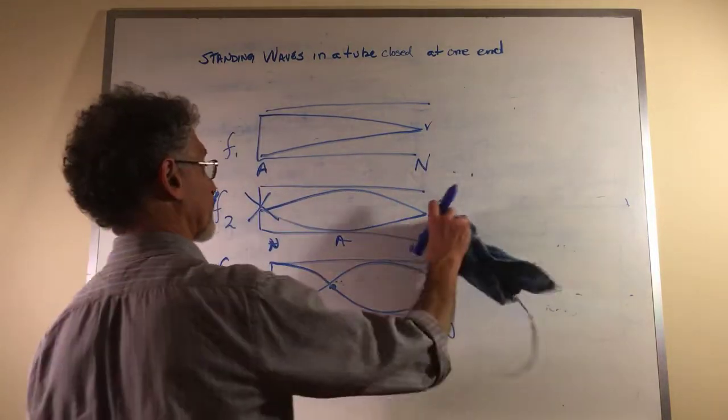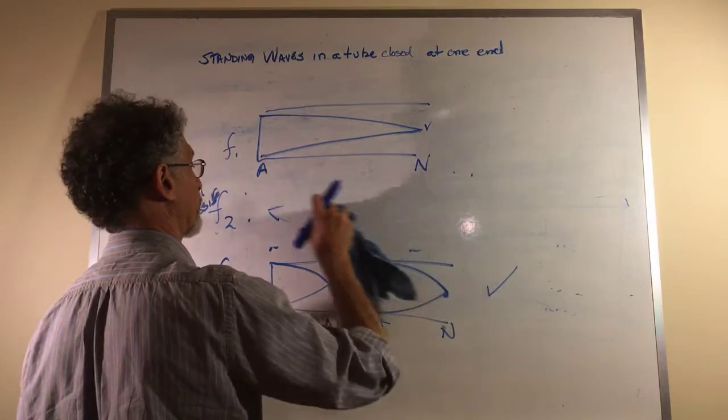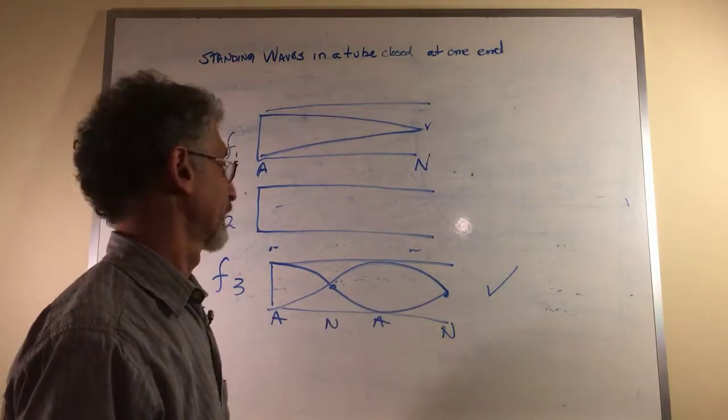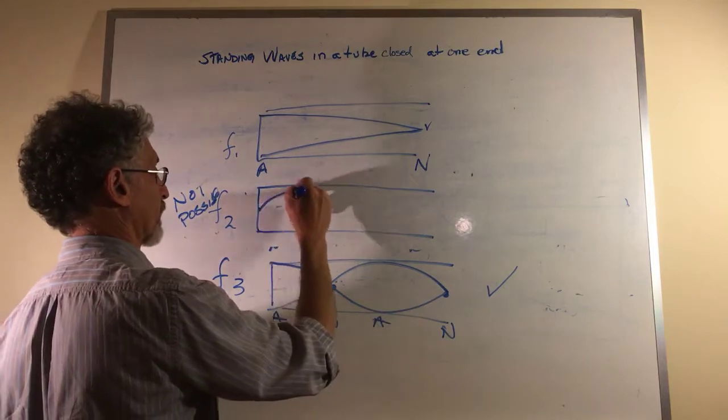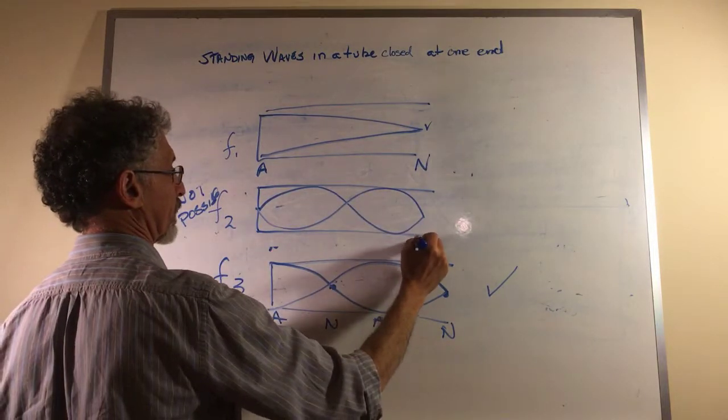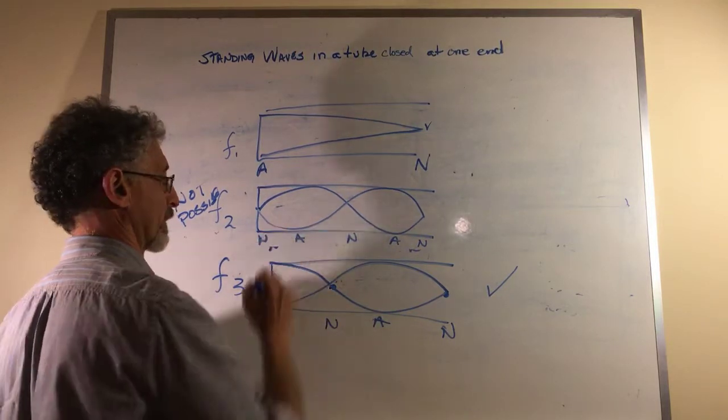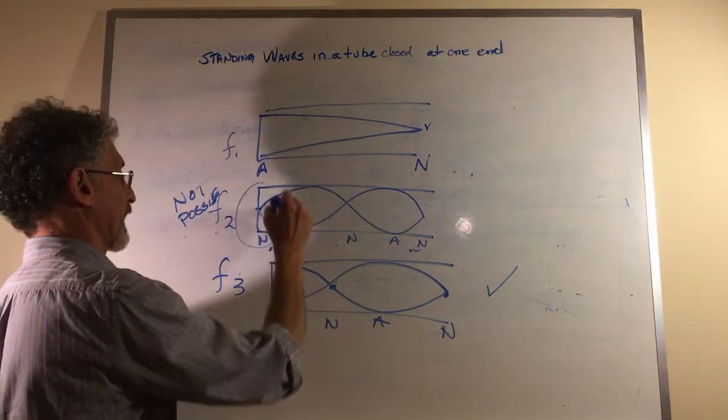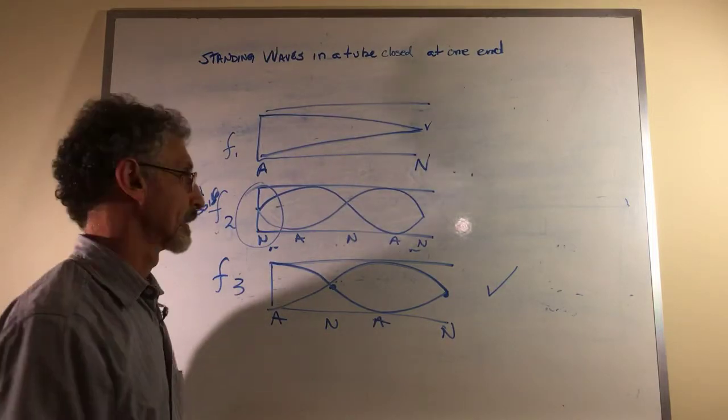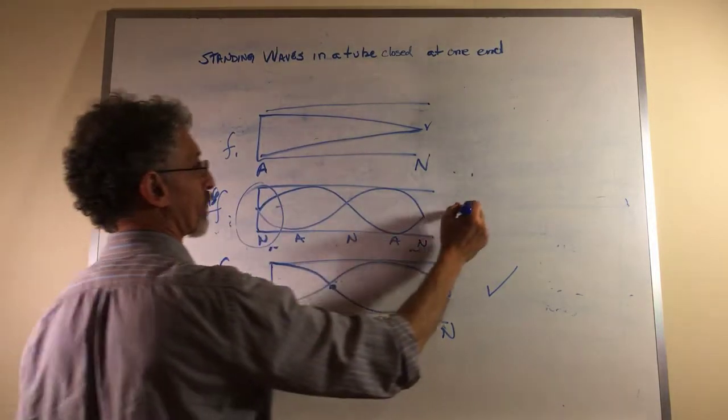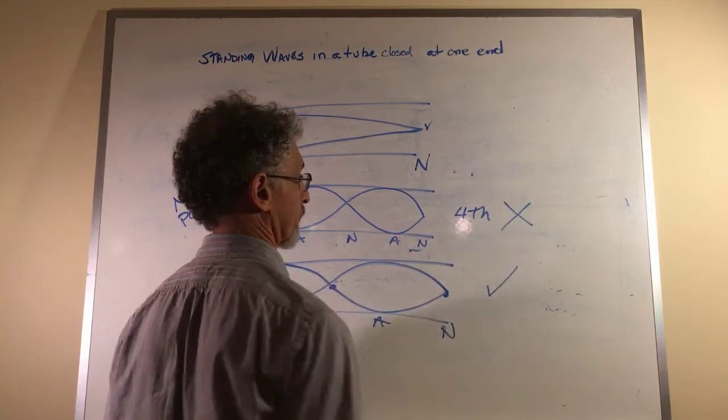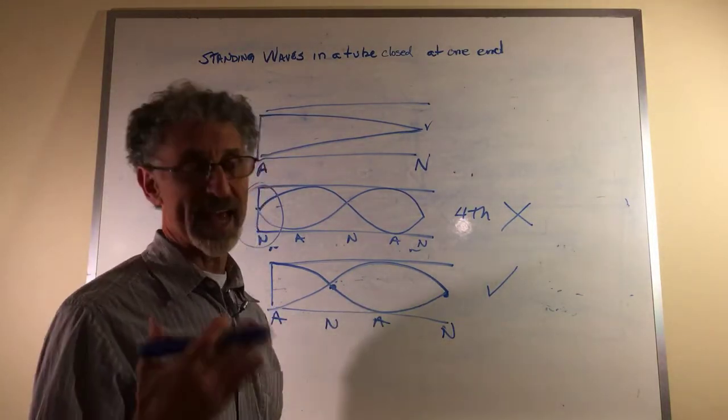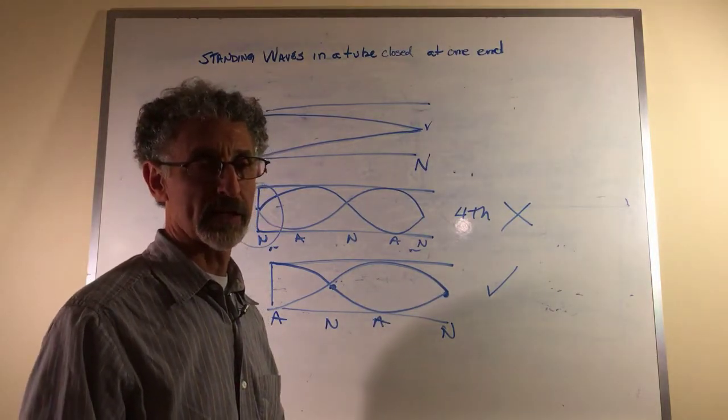Let's go to the fourth harmonic. If it's a quarter wave resonator, then we should be able to have a whole wave in here. So we have node, anti-node, node, anti-node, node. Do you have a problem, Houston? We cannot have a node at a closed end. So it is no fourth harmonic. Not possible. As it turns out, if we keep doing this, we will find that you can't have an even harmonic with a tube that's closed at one end.